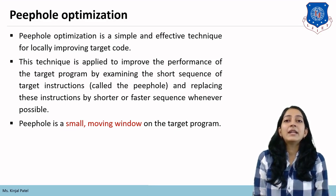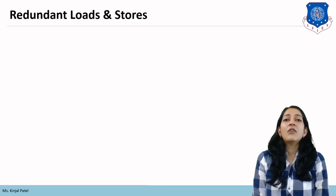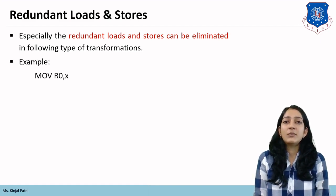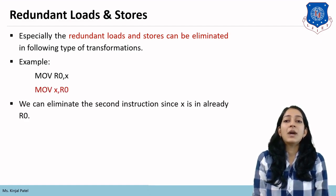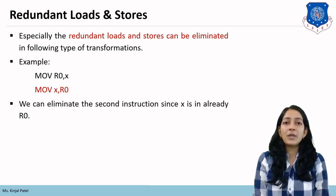There are different techniques of peephole optimization which we will learn in detail. The first technique is redundant loads and stores. Redundant loads and stores can be eliminated by the following type of transformation. For example, there is one instruction 'move r0, x' and another instruction 'move x, r0'. We can eliminate the second instruction since x is already in r0.